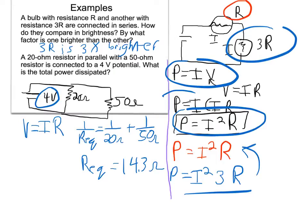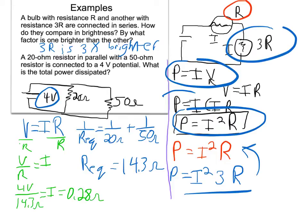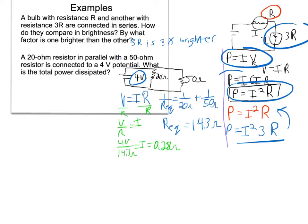Now let's figure out the current. Current equals V over R, so my current is 4 volts divided by 14.3 ohms, which gives 0.28 amps. You might wonder whether you need to find power for each resistor separately and add them. No — because when you found the equivalent resistance, it replaces both old resistors with one equivalent resistor of 14.3 ohms. The units for current are amps, not ohms.